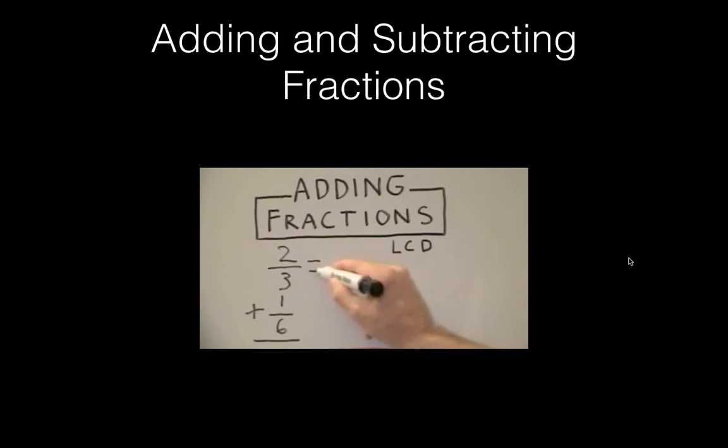If you did it correctly, you should have got an LCD of 6. We put 6 as the denominator for both fractions. For the top fraction, we take 6, divide it by 3 to get 2. We take that 2, multiply it by 2 to get 4.